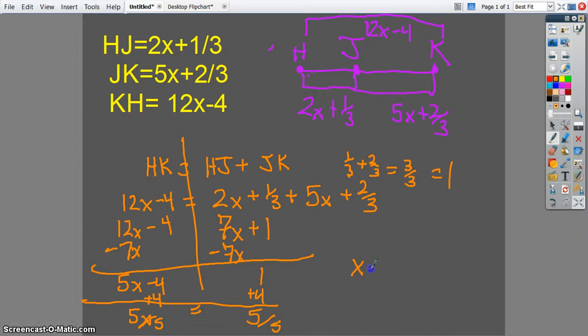So x is going to be 1. If you need to know what one of the values is, all you do is plug it back in. Say you need to know JK. You do 5 times 1 plus 2 thirds. So your final answer would be 5 and 2 thirds.